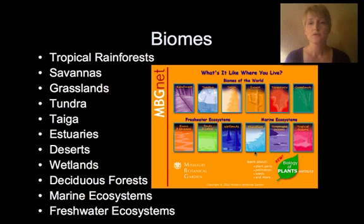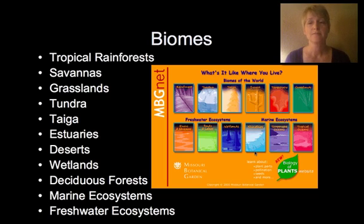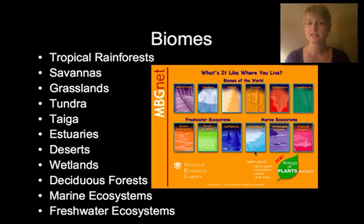There's the tundra, which is an Arctic area, and the taiga, which is mostly coniferous forest. We have estuaries where water from rivers meets the ocean, and deserts — like here in Arizona — which get very little rainfall and are very warm, so different plants and animals live there. We also have wetlands, where it's almost difficult to tell where the water stops and the land starts, deciduous forests, and then marine and freshwater ecosystems.